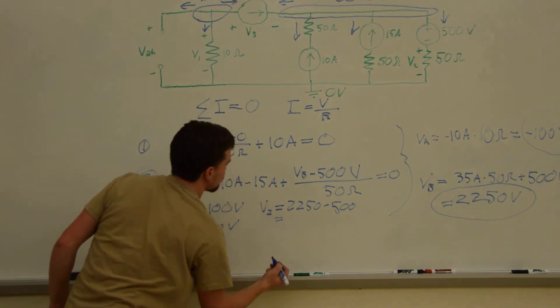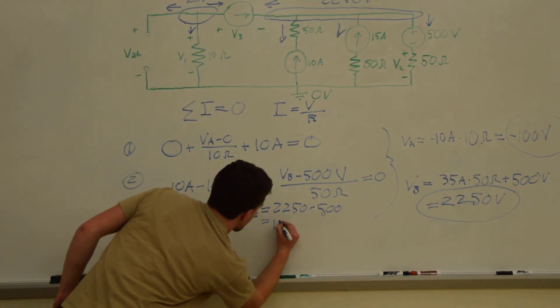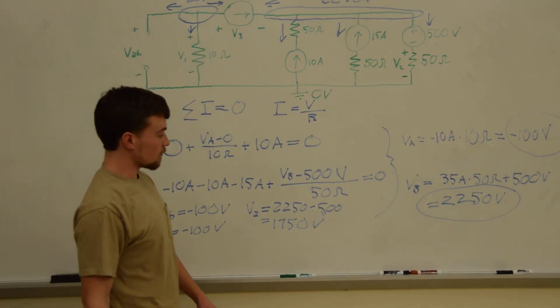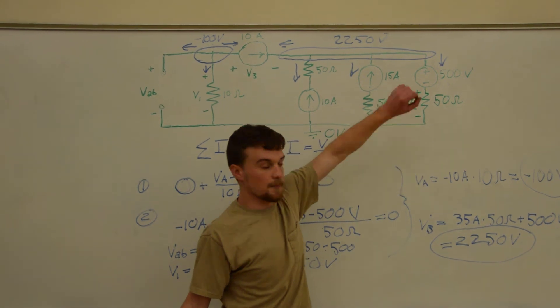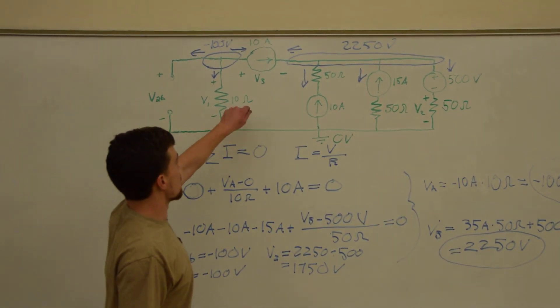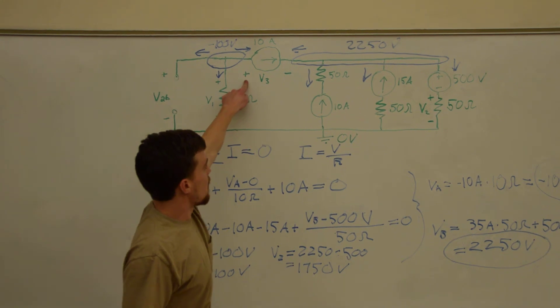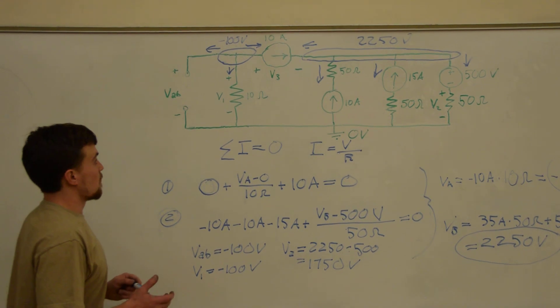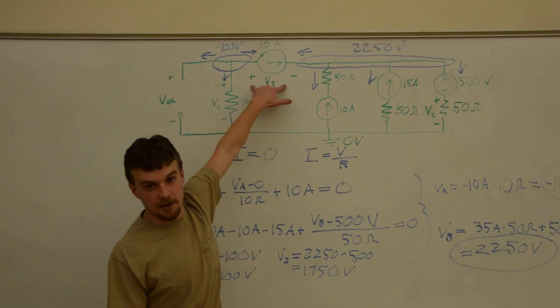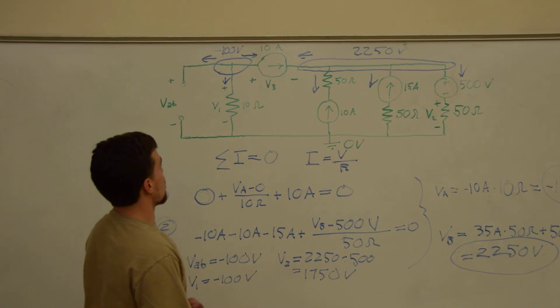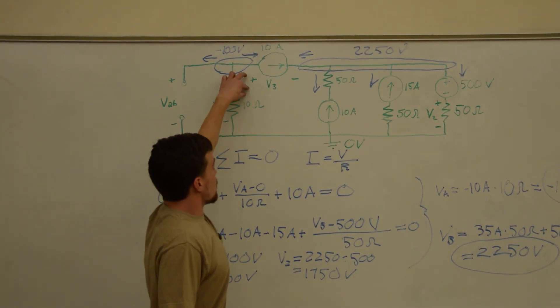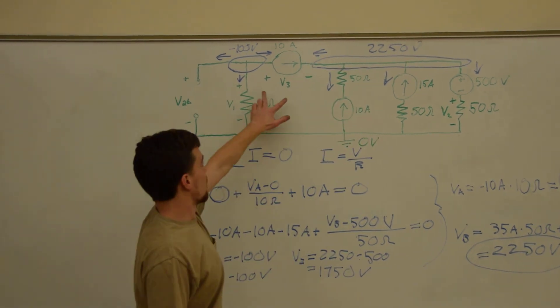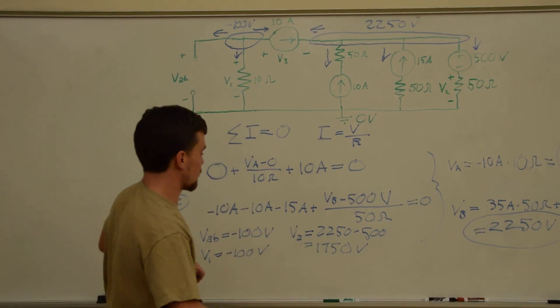And finally, we want V3, which is the voltage across that resistor. From here to there across that source. Now, we have to be careful about the direction, the polarity of this. So, we need to take this voltage and subtract this voltage from it to get the voltage from here to there.